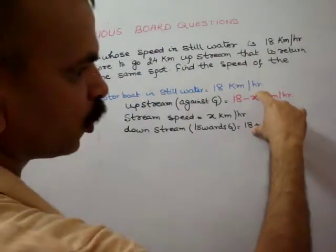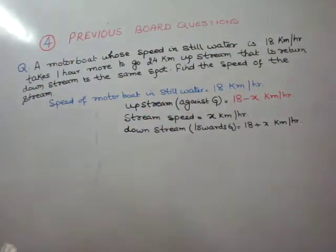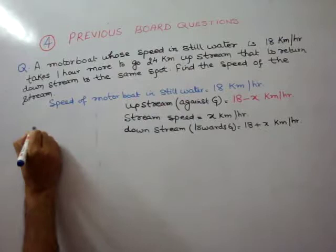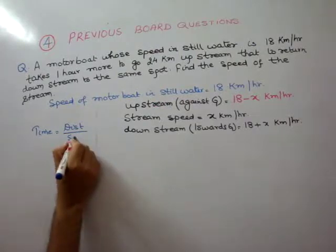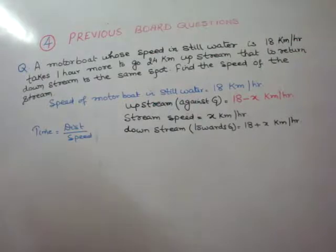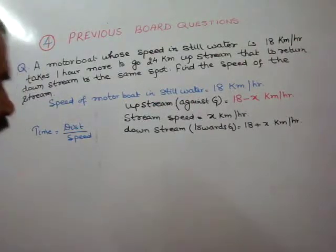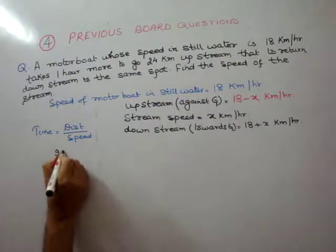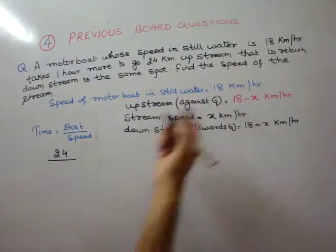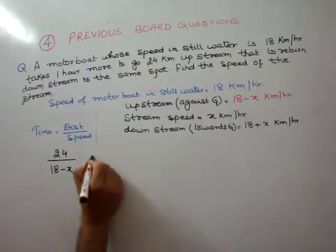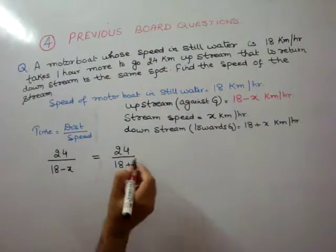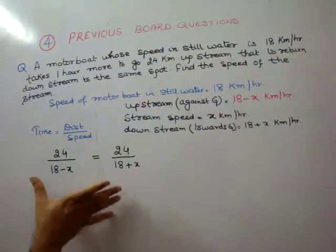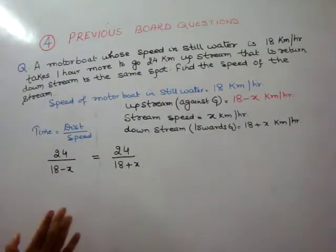Now what we will do is set these equal. Our formula is: time is equal to distance by speed. The distance given is 24 km. So the equation that will form: 24 by (18 minus x) — we take upstream once — that is equal to 24 by (18 plus x) for downstream. Now let us look at what the time condition is.